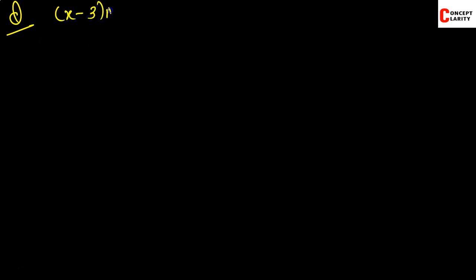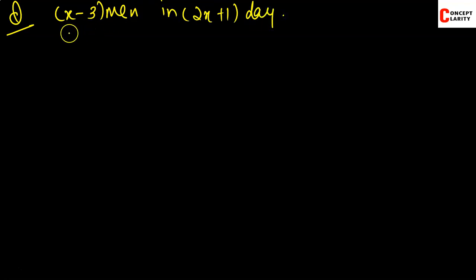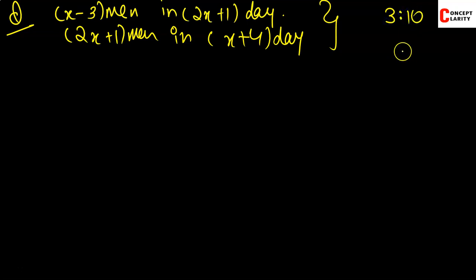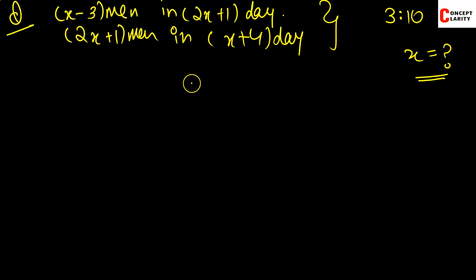The question is: the work done by (x−3) men is completed in (2x+1) days, and the work done by (2x+1) men is done in (2x+4) days.